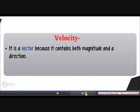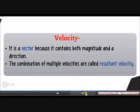Velocity. It is a vector component because it contains both a magnitude and a direction. When you have multiple velocities, you can combine them, which will result in a resultant velocity.